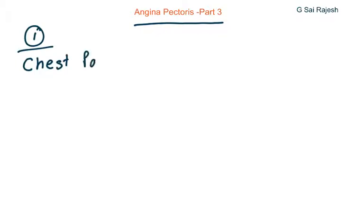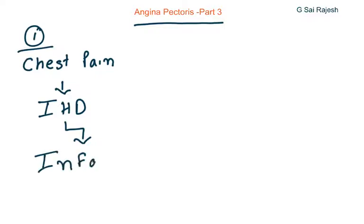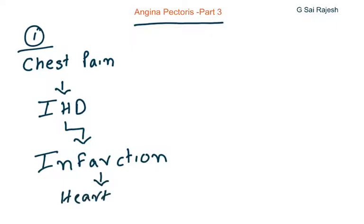Till now in part 1, we discussed what is angina pectoris — it is commonly known as chest pain. It occurs mainly because of ischemic heart disease; ischemia means reduced blood circulation. If this continues it may result in myocardial infarction, which is complete occlusion of blood supply to that myocardium, causing necrosis.